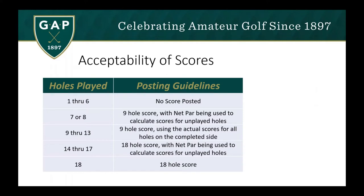Let's talk about the acceptability of scores. If you only played up to six holes of golf, you cannot post that score. If you played seven or eight holes, you post a nine-hole score using net par for unplayed holes — net par equals par plus any handicap strokes you would have received. If you played nine through 13 holes, post the nine-hole score using actual scores for all holes on that completed side. If you played 14 through 17 holes, post an 18-hole score using net par for unplayed holes. A key change: previously you needed 13 holes to post; now you need 14.